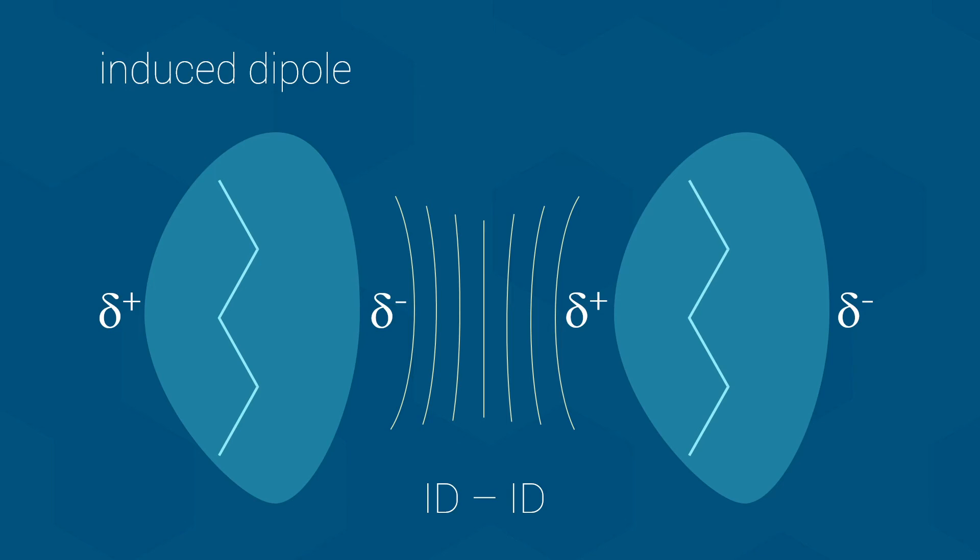And that brings us to the ionic interactions. These are quite easy to understand. Essentially, if we have two molecules that each have a full charge of opposite polarity, they will strongly attract each other. This is known as an ion-to-ion interaction, although we often just simply call it an ionic interaction.